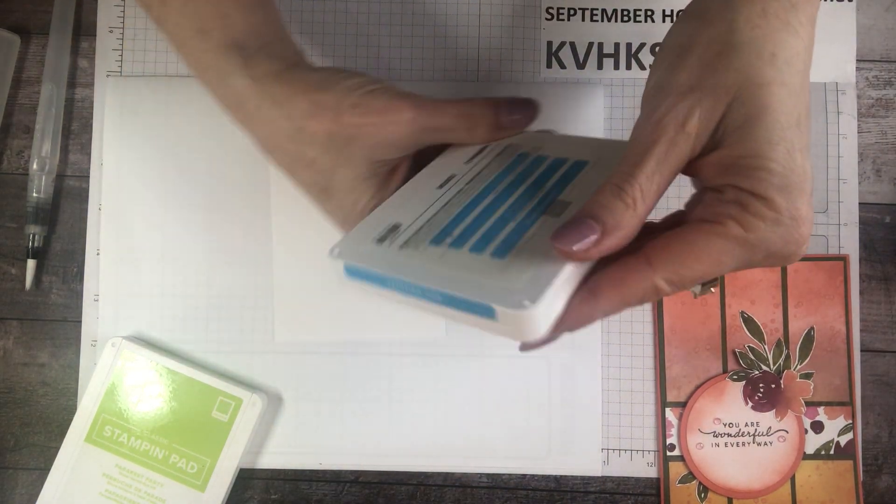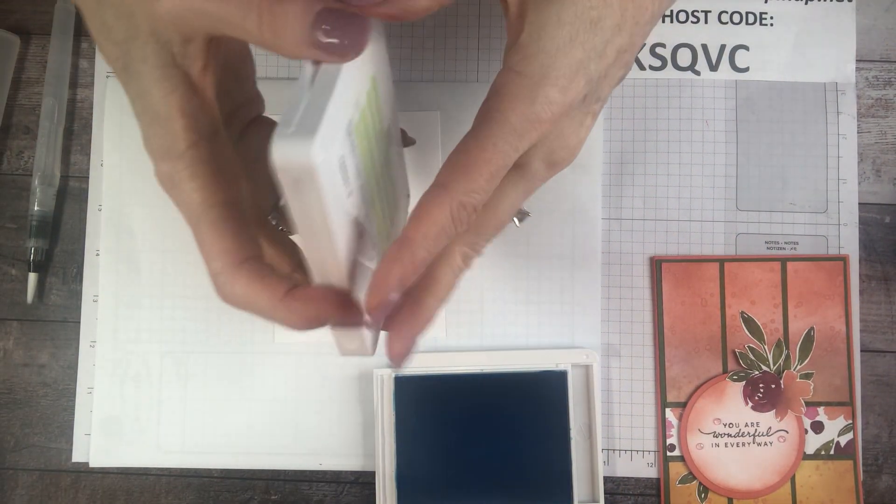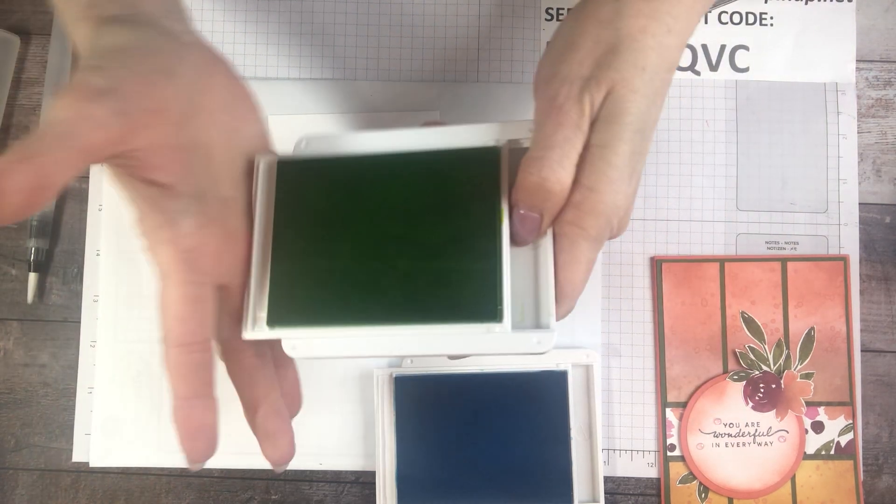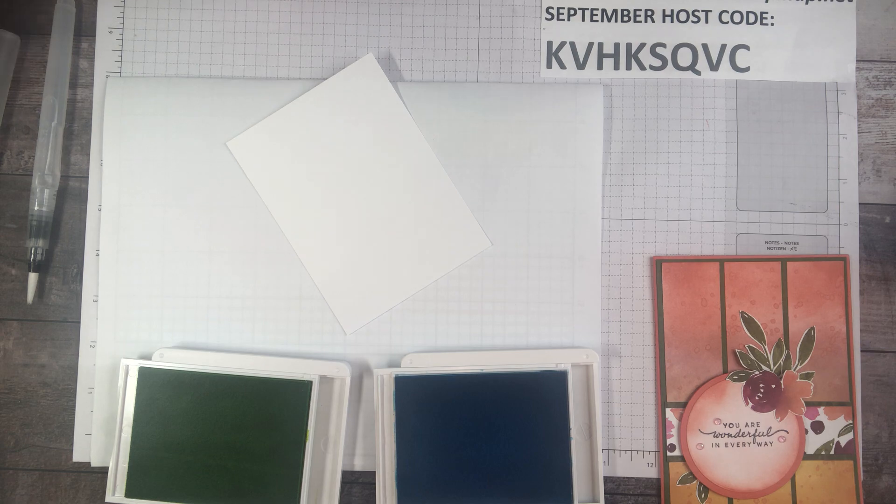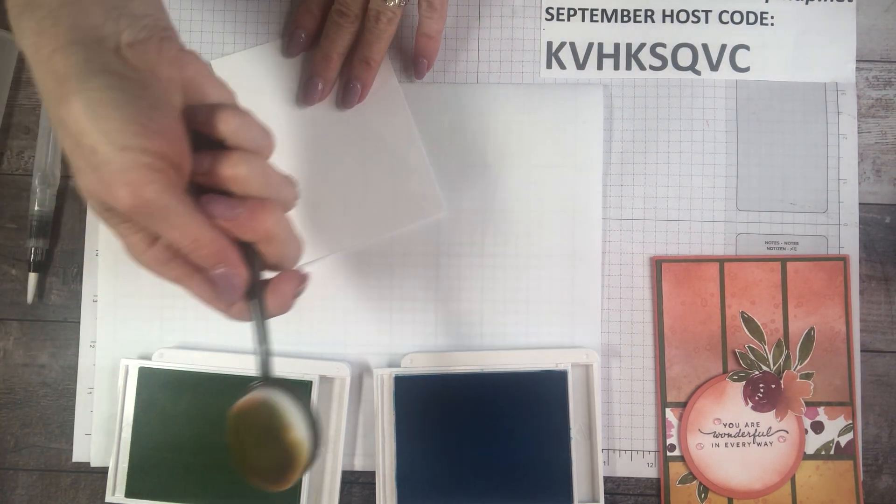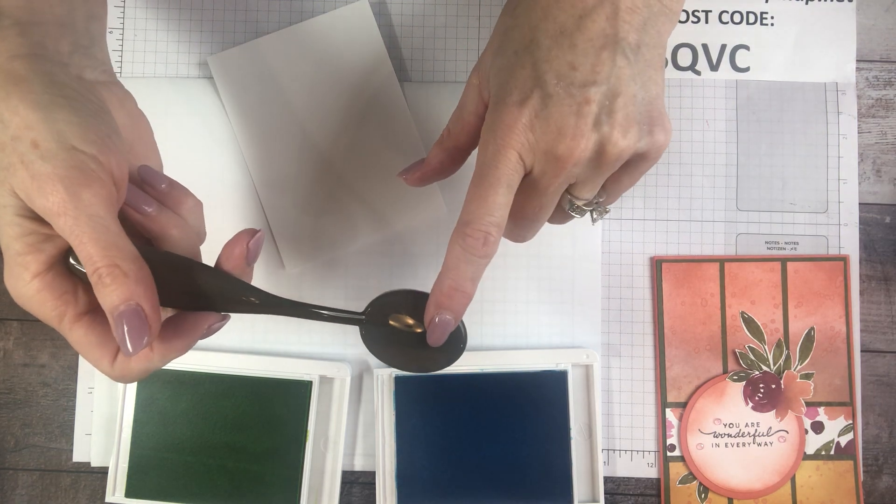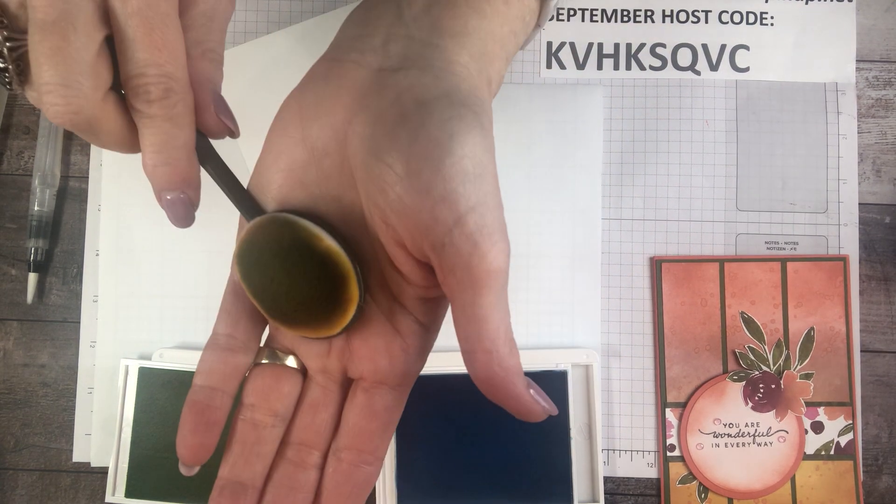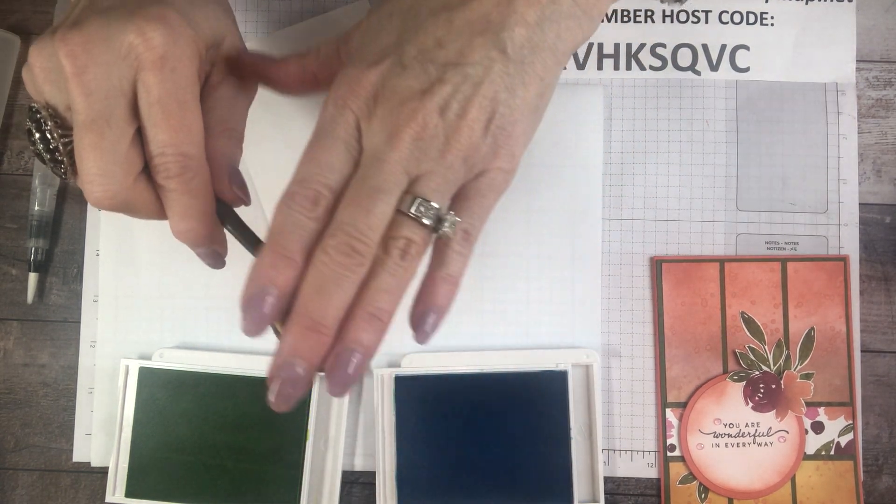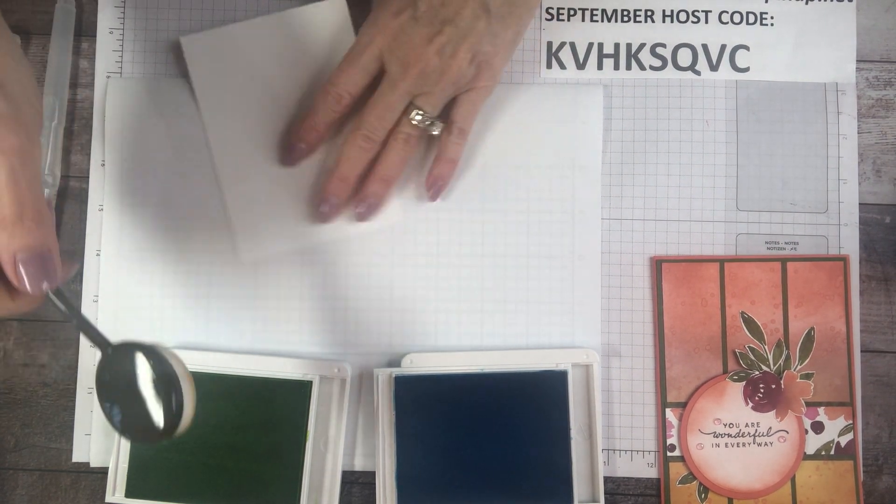I'm gonna work with Tahitian Tide and Parakeet Party, the opposite of fall colors. We're gonna get funky fun with our in-colors. There are five in-colors and we're gonna play with two of them today. Now with the blending brushes, you get three of these for $12.50. Mine are stained, but they clean very nicely just by rubbing them on some paper.